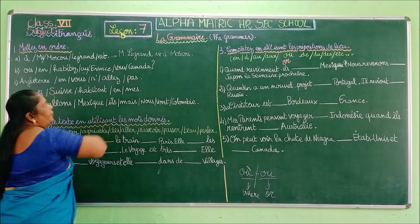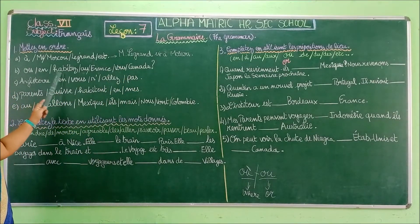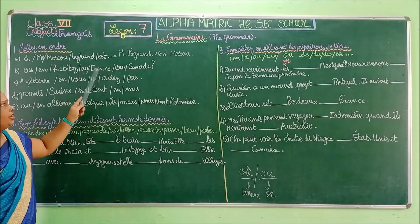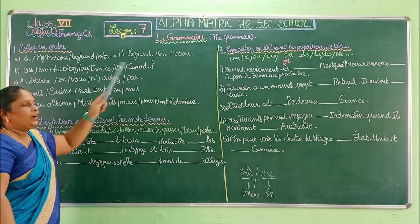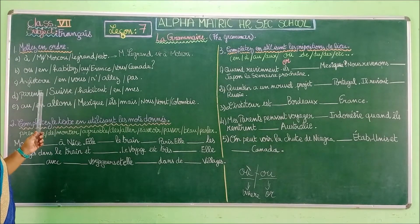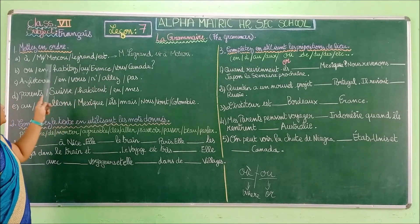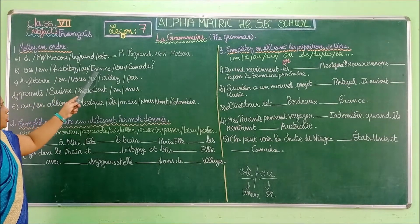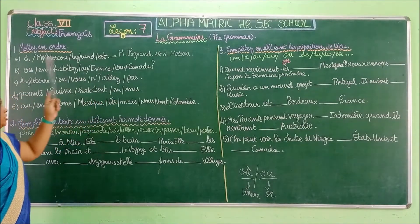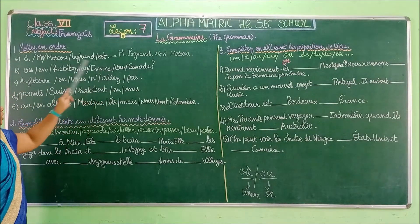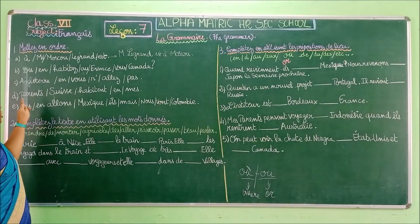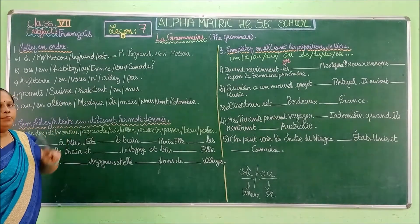Vous — you. Canada. So what will be this sentence? 'Ou' — 'in', 'live', 'in', 'France', 'you', 'Canada'. Can you guess the sentence? Vous habitez en France ou au Canada? — You live in France or in Canada.